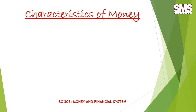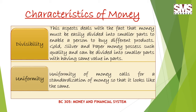The next characteristic of money is divisibility. This aspect deals with the fact that money must be easily divided into smaller parts to enable a person to buy different products. Gold, silver and paper money possess such quality and can be divided into smaller parts while having the same value in parts.